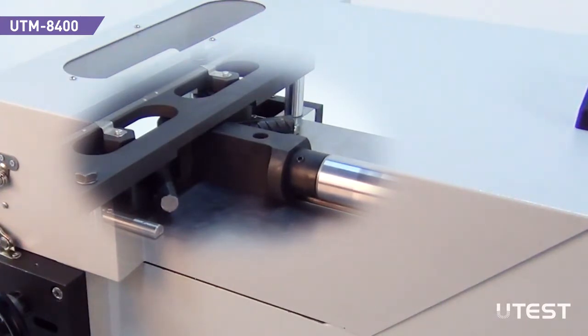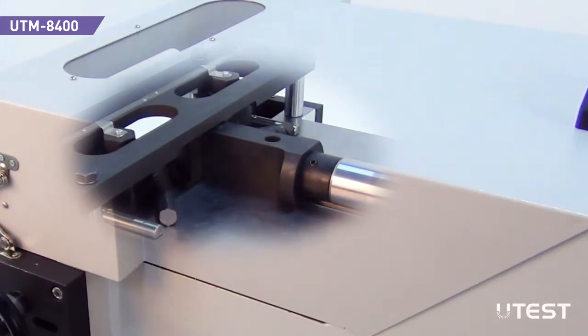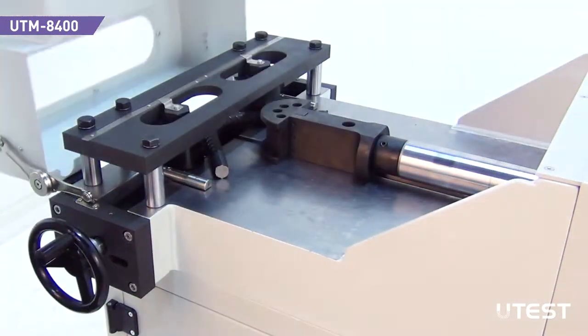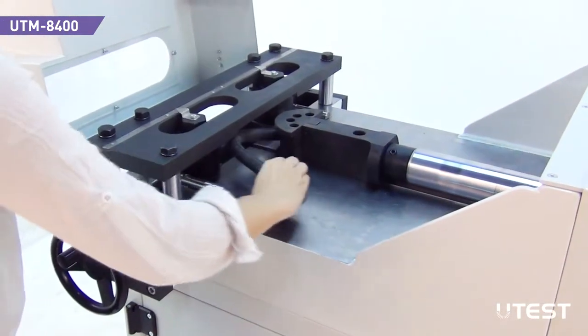After the sample is bent at the desired angle, the mandrel is retracted by shifting the control valve to unload position. Remove the sample for the examination.